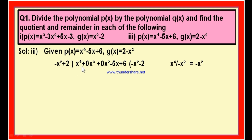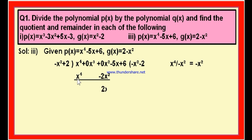The first term of the dividend is X power 4 and the first term of the divisor is minus X square. Divide X power 4 by minus X square: plus by minus is minus, X power 4 by X square is X square, giving minus X square as the first term of the quotient. Multiply all terms of the divisor by minus X square: minus X square into minus X square is X power 4, and plus 2 into minus X square is minus 2X square. Subtract, and the result is plus 2X square minus 5X plus 6.